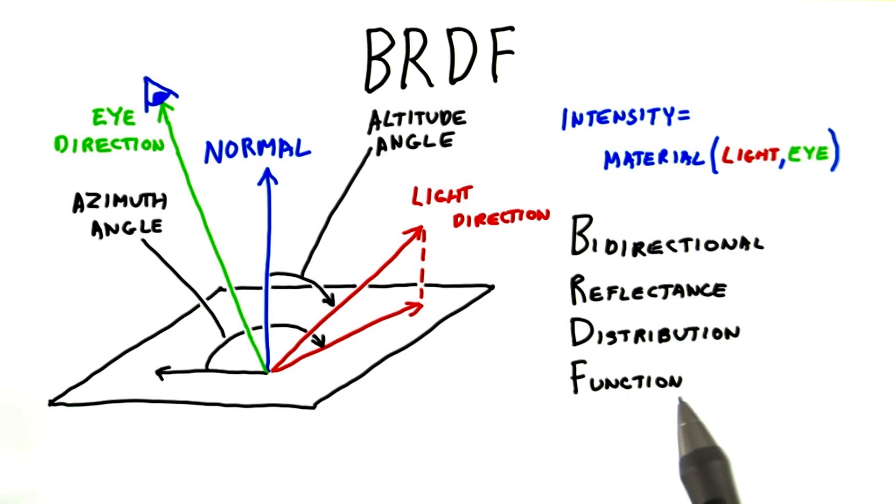Let's look at that phrase. First, it's a function. The inputs are the light and the eye. The function depends on two directions, so it's bidirectional.